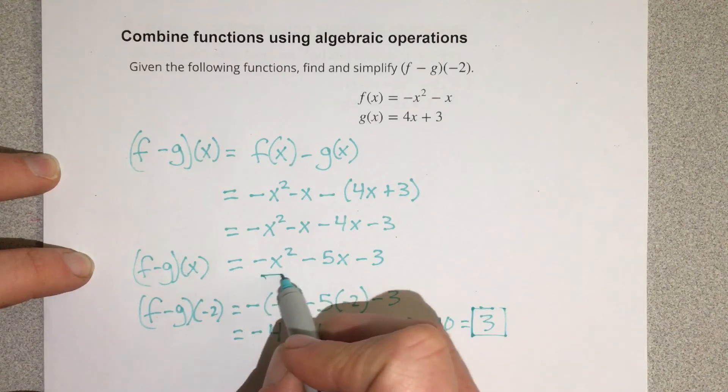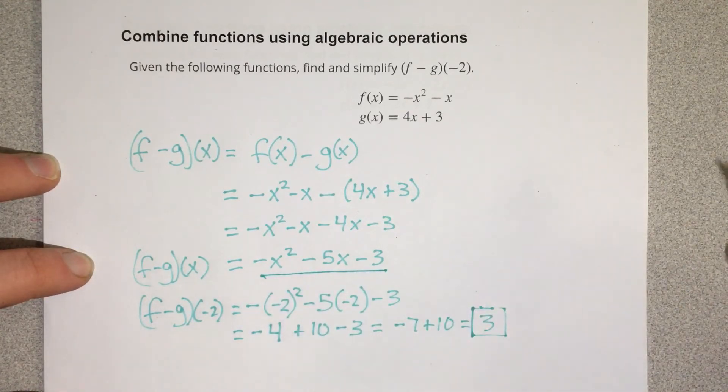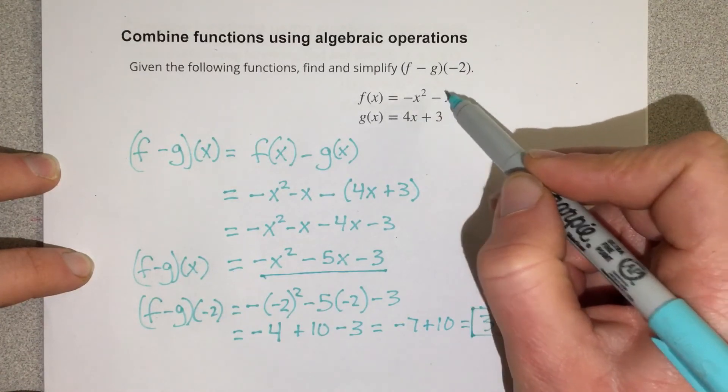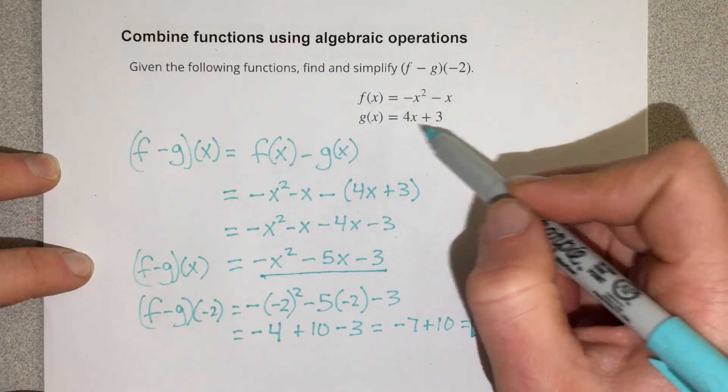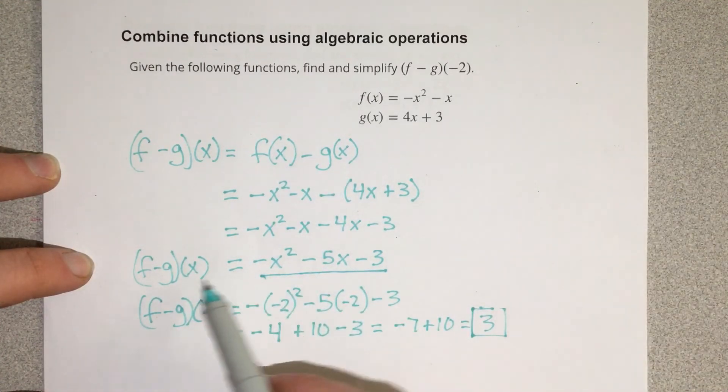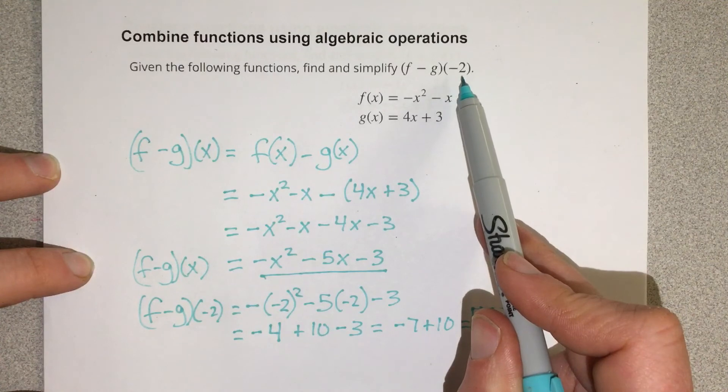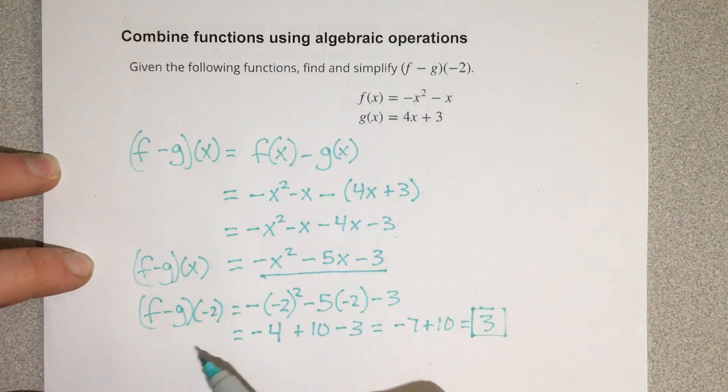Now, why did I go through this route? Is there an easier route to do this? Could I have just started plugging negative 2 in for the g function and for the f function and combine them together that way? Yes, probably. But if I find this equation first, I can now just find any f minus g function for any value of x. A lot of problems will ask you more than just to evaluate negative 2. They might ask you to evaluate 10 and 5 and 7. If you have this equation, it makes it easier to do multiple of these.